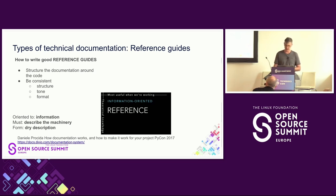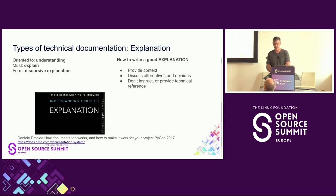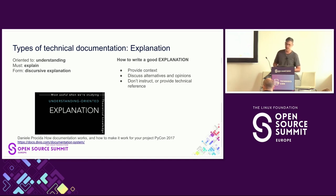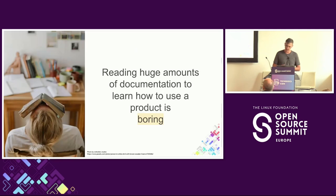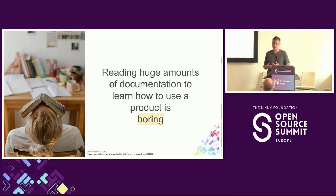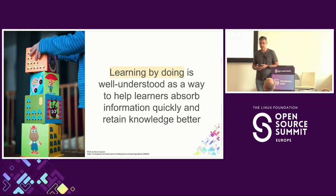The fourth type of documentation is explanation, which is meant to give a broader understanding of a specific area — not a specific topic but an area. It comes in the form of a discursive explanation, for example an article about the evolution of food through history. This type of documentation is typically written, and we know that reading huge amounts of documentation is most of the time very boring.